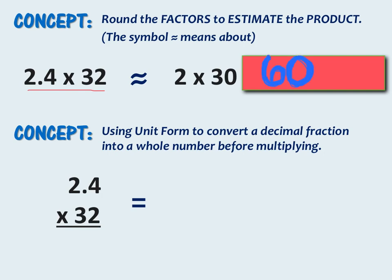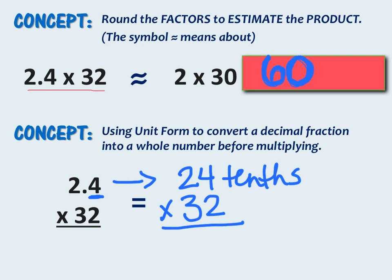The next step is to convert the decimal into its unit form before multiplying. Looking at our problem again, we see we have 2 and 4 tenths. 4 tenths is our last place, so we're going to convert this to the tenths place. How many tenths are in 2 and 4 tenths? Well, we know that that is 24 tenths times 32.